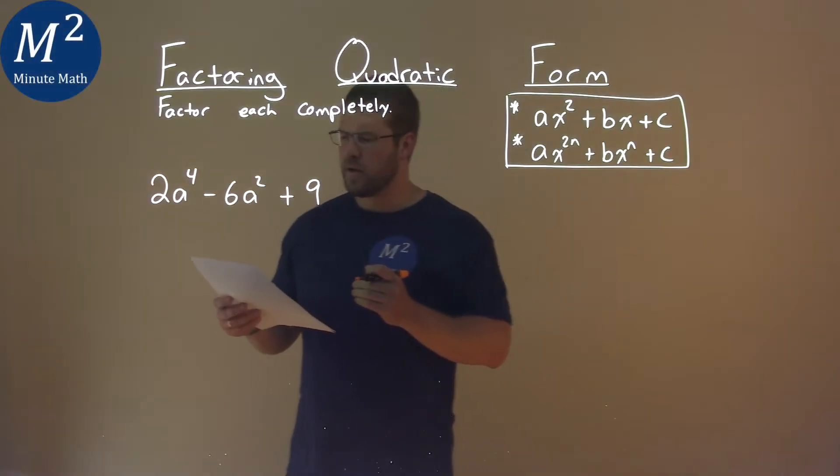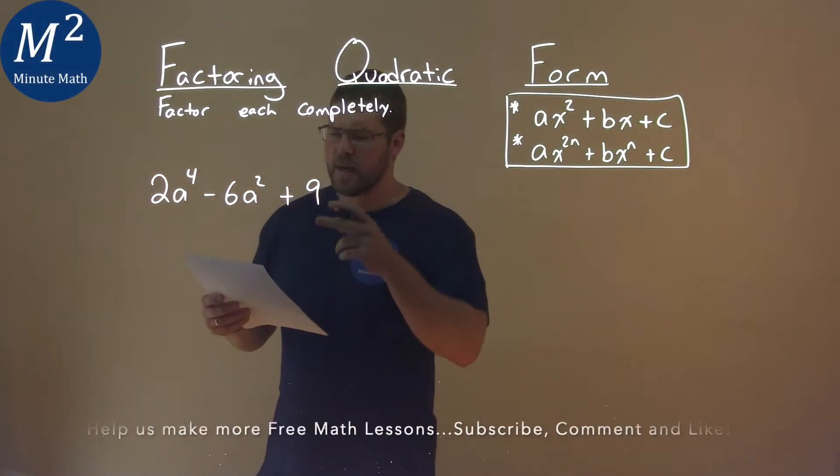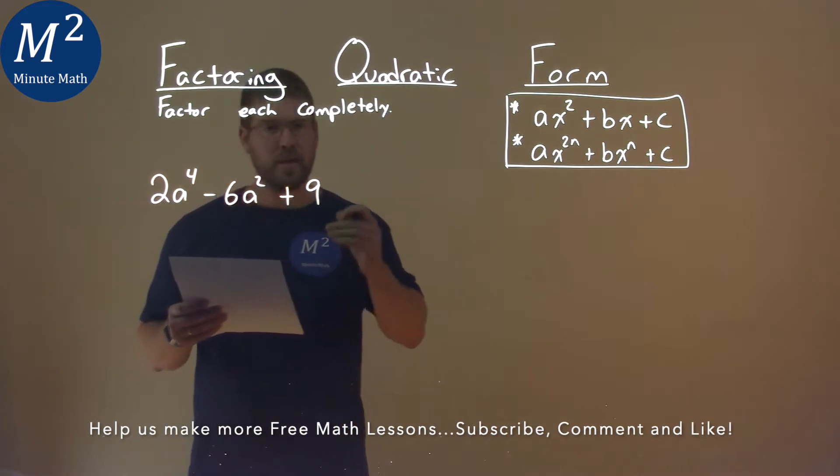We're given this problem right here, 2a to the fourth minus 6a squared plus 9 and we need to factor completely.